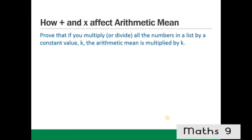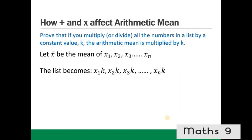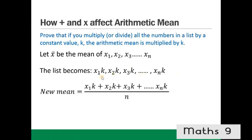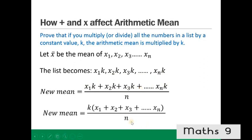If you multiply all numbers in a list by a constant k, the new mean = (x₁k + x₂k + … + xₙk) / n = k × (sum of xᵢ)/n = k × x̄. So the arithmetic mean is also multiplied by k. Dividing is the same as multiplying by 1/k.